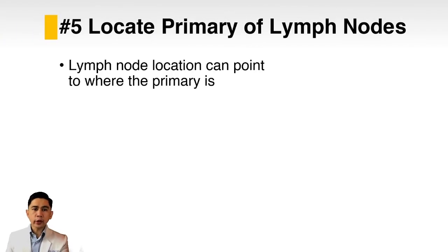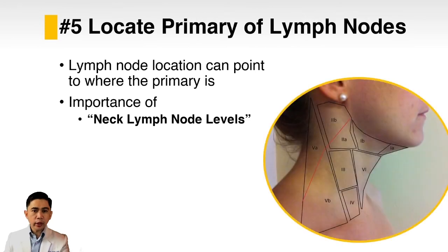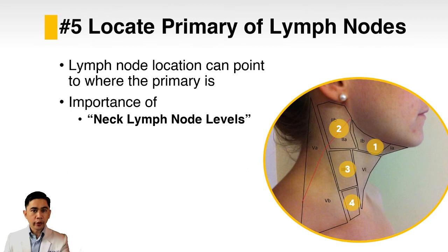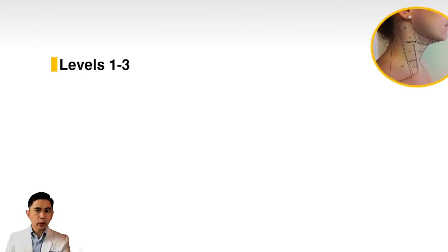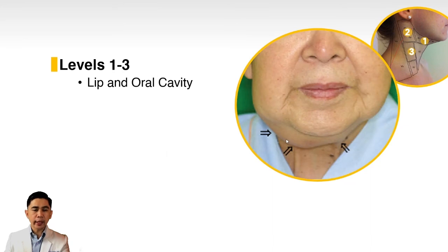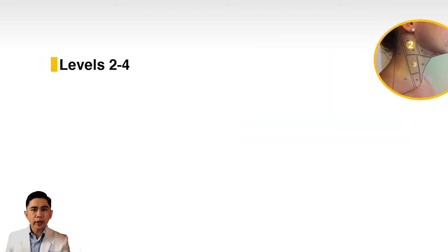Lymph node location can point to where the primary is — this is where knowing the neck lymph node levels is important. Level one is above the hyoid and below the mandible. Level two is in the upper one-third of the sternocleidomastoid muscle, level three in the middle third, and level four in the lower third. Level five lymph nodes are found primarily behind the sternocleidomastoid muscle. Level six is everything in front of the sternocleidomastoid below the hyoid. For lymph nodes in levels one to three, suspect the primary is in the lip or oral cavity.